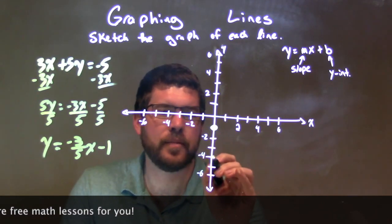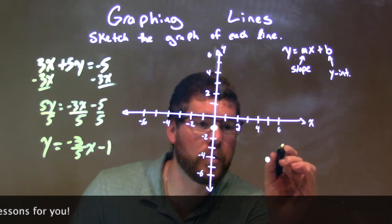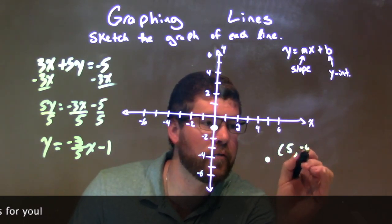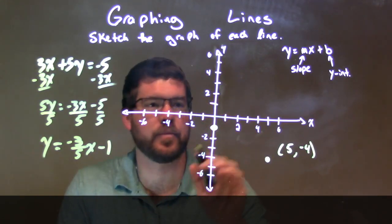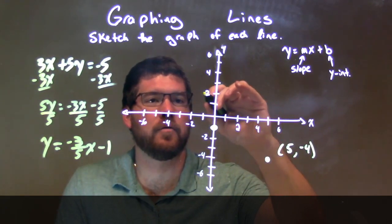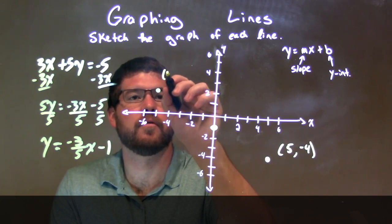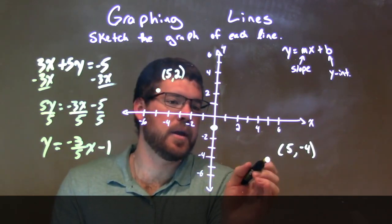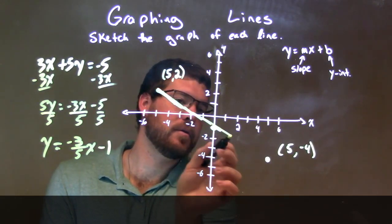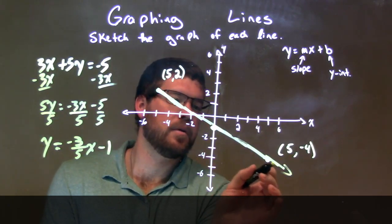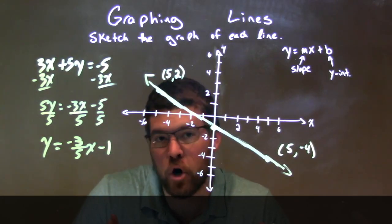Our y-intercept is negative 1 — that b-value right there. And our slope is negative 3 fifths. So we're going to go down 3 — 1, 2, 3 — over 5 — 1, 2, 3, 4, 5. That coordinate point right here is 5, negative 4. We can also go up 3 units to the left 5 — up 1, 2, 3, and left 1, 2, 3, 4, 5 — giving us the point negative 5, positive 2. We connect these dots and there we have our line.